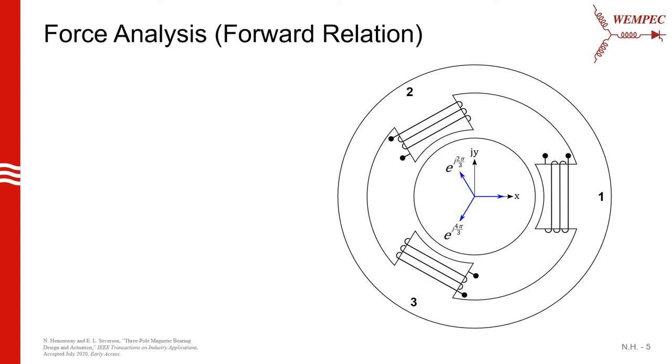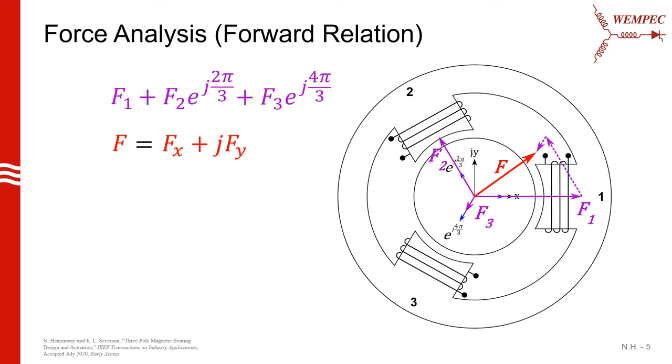We can see a general three-pole bearing here. It has three electromagnets spaced 120 degrees apart that can each impart a force on the rotor. I then have these blue unit vectors drawn that align with each axis of the bearing. Note that the total force output of the bearing will be the sum of the force component along the first axis plus the force component along the second axis plus the third component to produce a net force vector that we can represent as an x and y component in the complex plane.